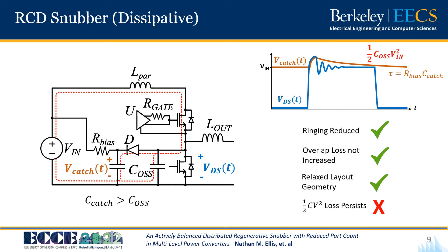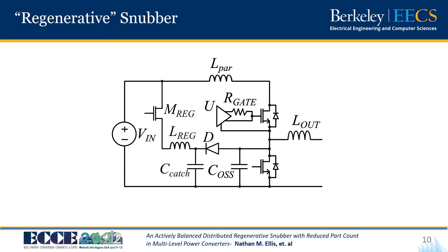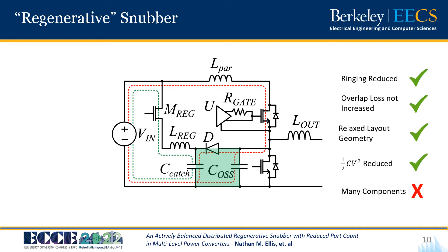To resolve this we need to talk about something that is not quite as common: the field of regenerative or non-dissipative snubbers. There are a few different types, but here is an example that uses four additional components including an inductor and one active switching device. In this case we have the same diode-capacitor catching circuit, but rather than bleeding off one-half CV² of energy, this energy is periodically resonated back onto the input voltage, effectively recycling it. Again we have our relaxed geometry constraints and only need our catching circuit to be close to the low-side FET. As a result we reduce overshoot and ringing, we switch fast for reduced overlap loss, and we now desire a larger commutation loop to preserve our one-half CV² energy which can now be recycled. The caveat is that this approach is starting to look pretty complicated or cost-prohibitive with added magnetics and control.